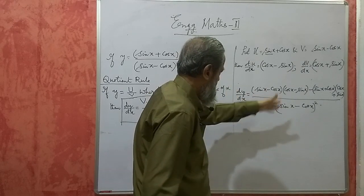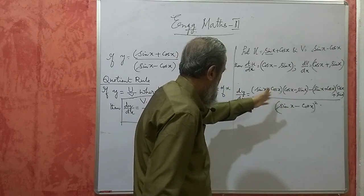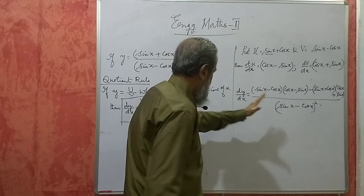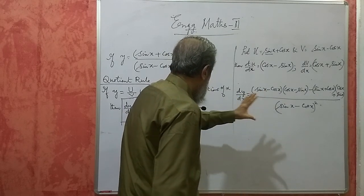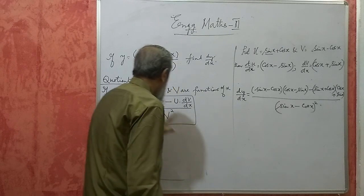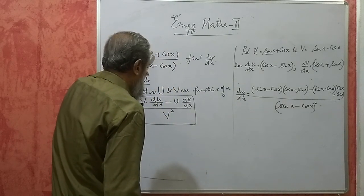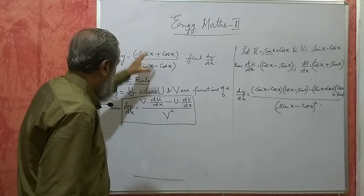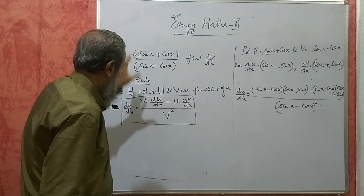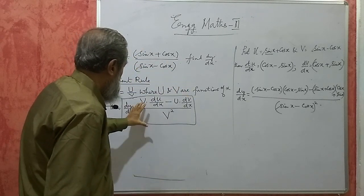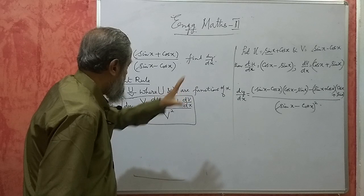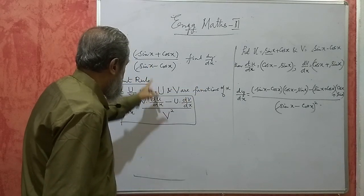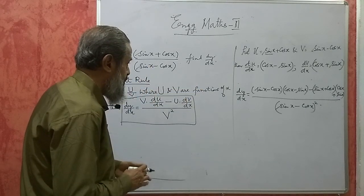First you have to recognize in which rule it comes, then do it correctly — remember the formula, substitute it. So this is called the quotient rule.